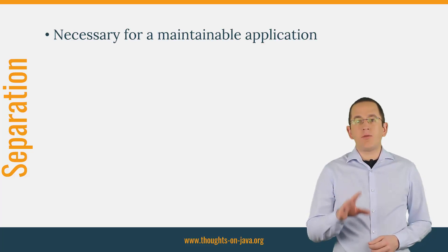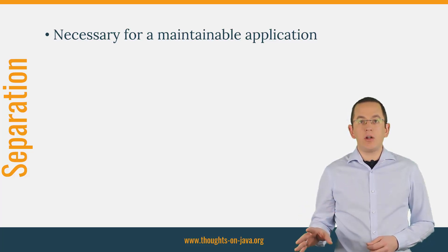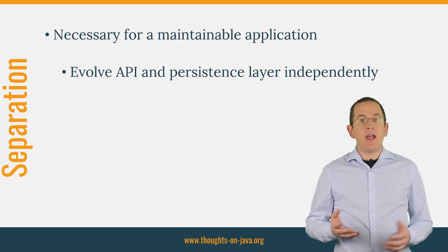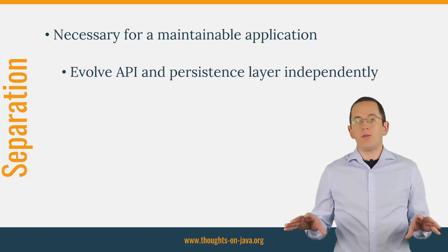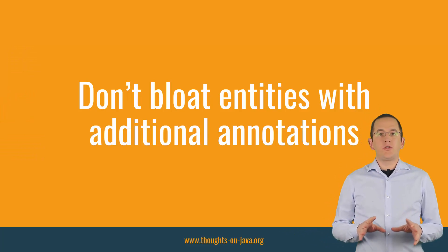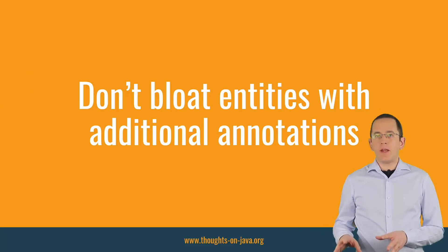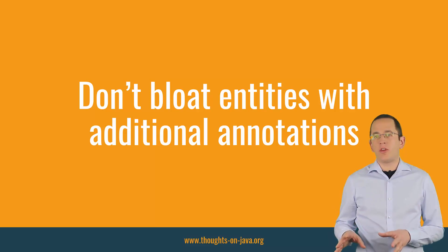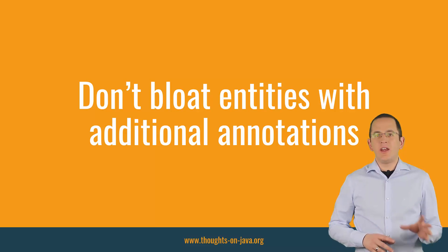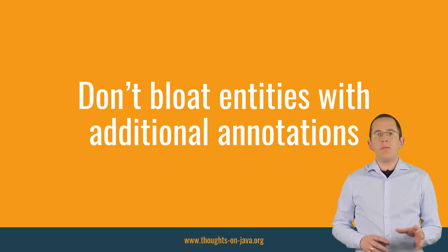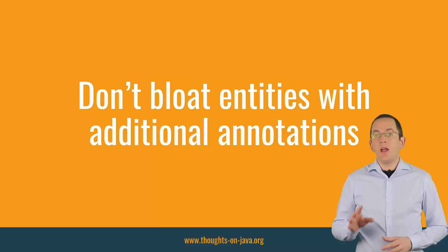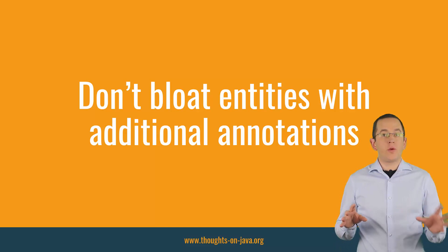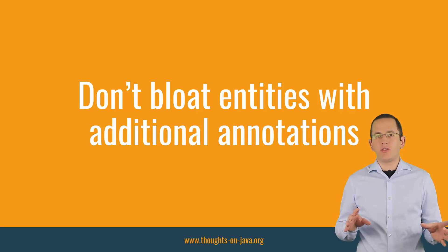If you don't do that, every change to your REST API will affect your entity model and vice versa. That means your API and your persistence layer can no longer evolve independently of each other. And if you consider exposing entities only when they are a perfect match for the input or return value of a REST endpoint, please be aware of the additional annotations you will need to add for the JSON serialization and deserialization. Most entity mappings already require several annotations. Adding additional ones for your JSON mapping makes the entity classes even harder to understand. Better keep it simple and separate the entity class from the class you use to serialize and deserialize your JSON documents.